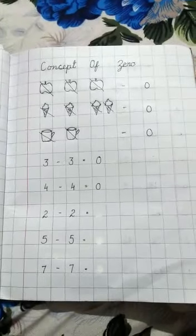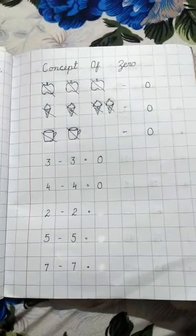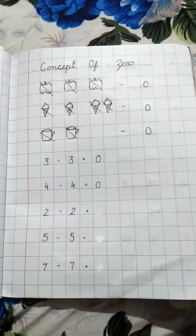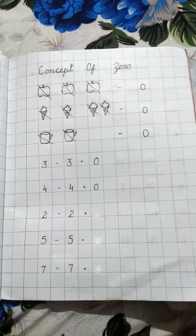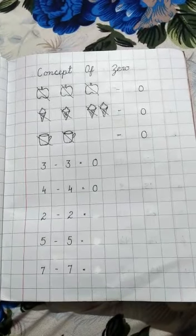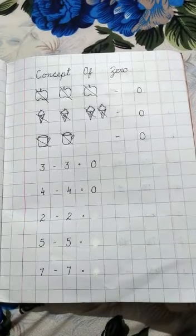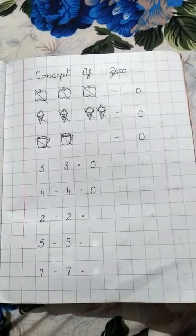Here we learn the concept of zero. 3 minus 3 is 0. 4 minus 4 equals 0. 2 minus 2 is 0. So in the same way, complete the rest children.